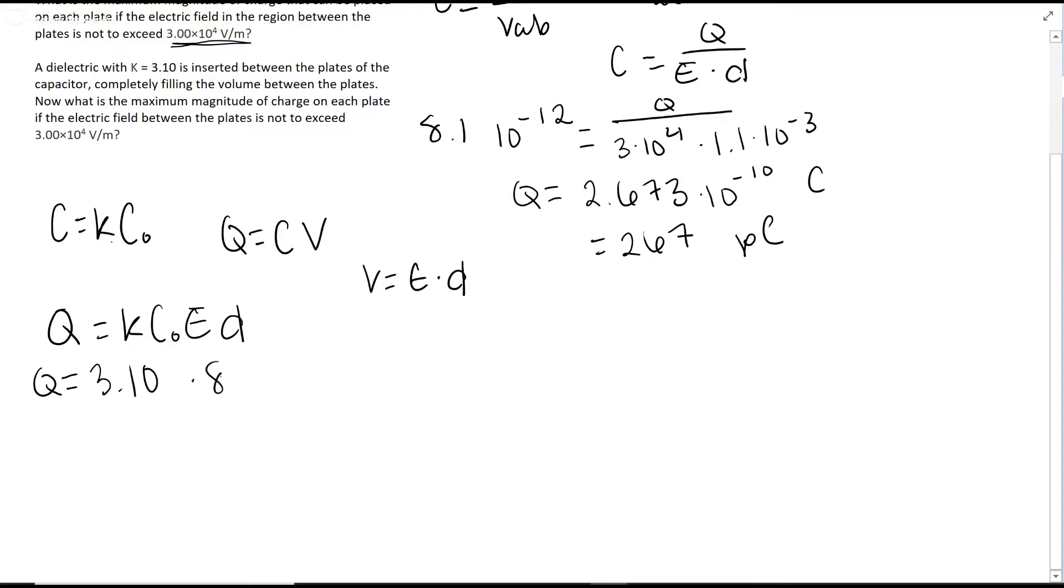K is 3.10. Our C value is 8.12. Our E value that they give us is 3 times 10 to the 4th. Our distance is 1.1 times 10 to the negative 3rd. Just go ahead and type that into your calculator, and you get 8.286 times 10 to the negative 3rd coulomb, which is about equal to 829 picocoulombs.